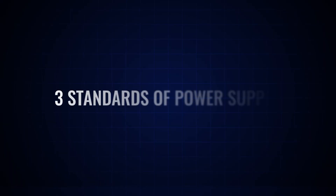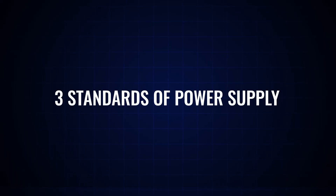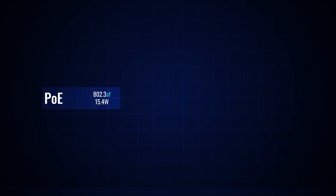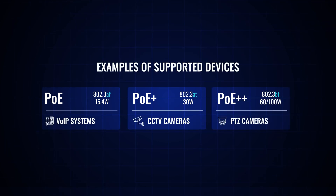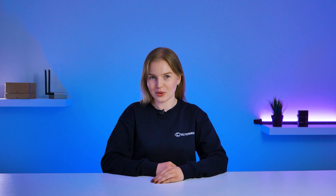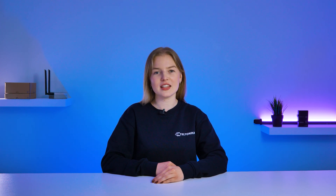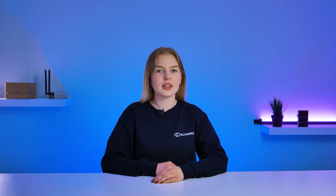Usually, active PoE comes with three standards of power supply: 802.3af, AT, and BT, all of which provide different power outputs. Active PoE performs a certain handshake and checks if the end device supports active PoE technology before providing it with internet and power.